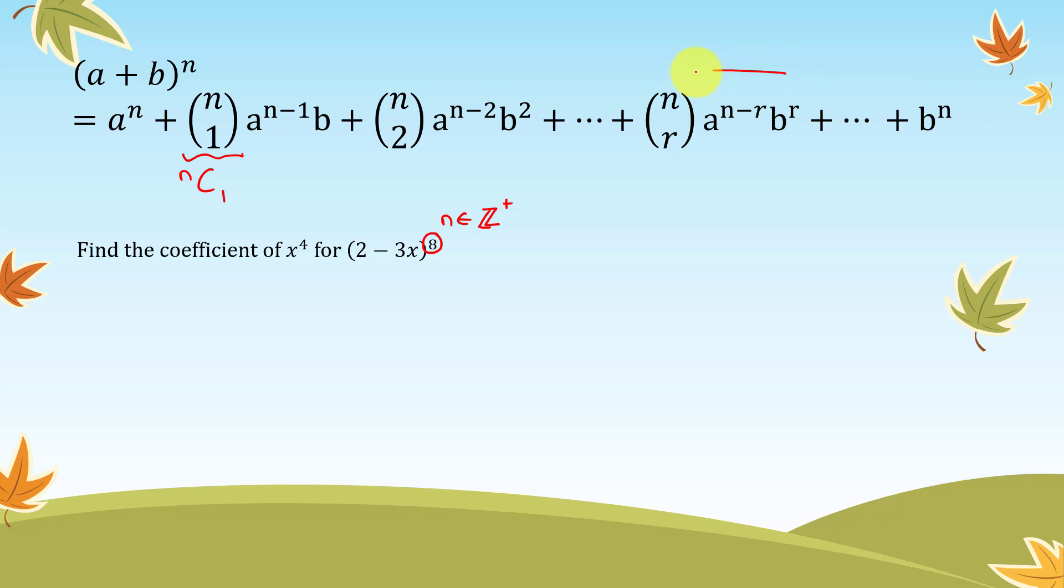This term over here is actually used when we want to find the r plus 1 term. So this is for t r plus 1. Do remember again, we only use this formula when we have some positive integer only.